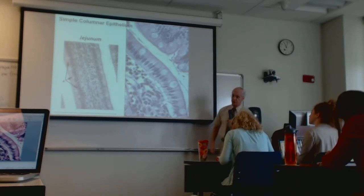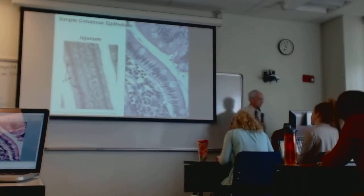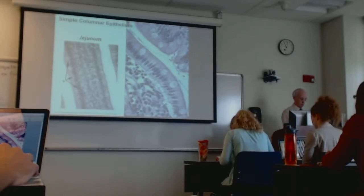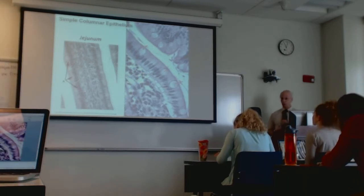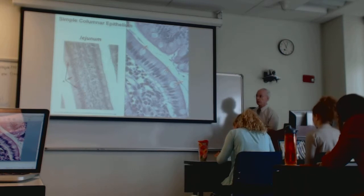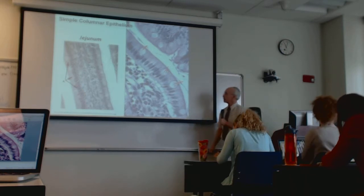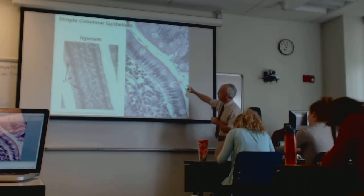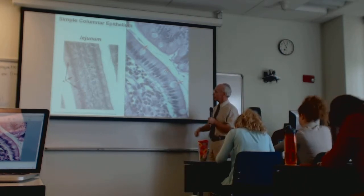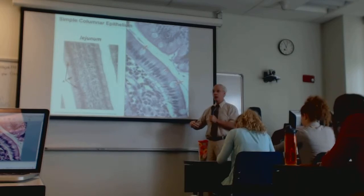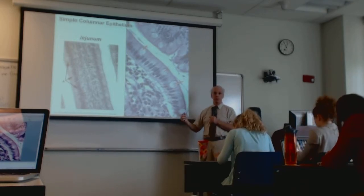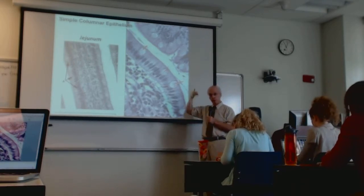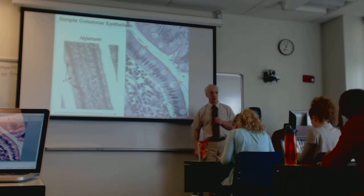You also see these goblet cells here. Goblet cells are mucous-secreting cells; you can see them in ciliated epithelium as well sometimes. Their relative abundance tends to increase as we move from the esophagus down the tract.